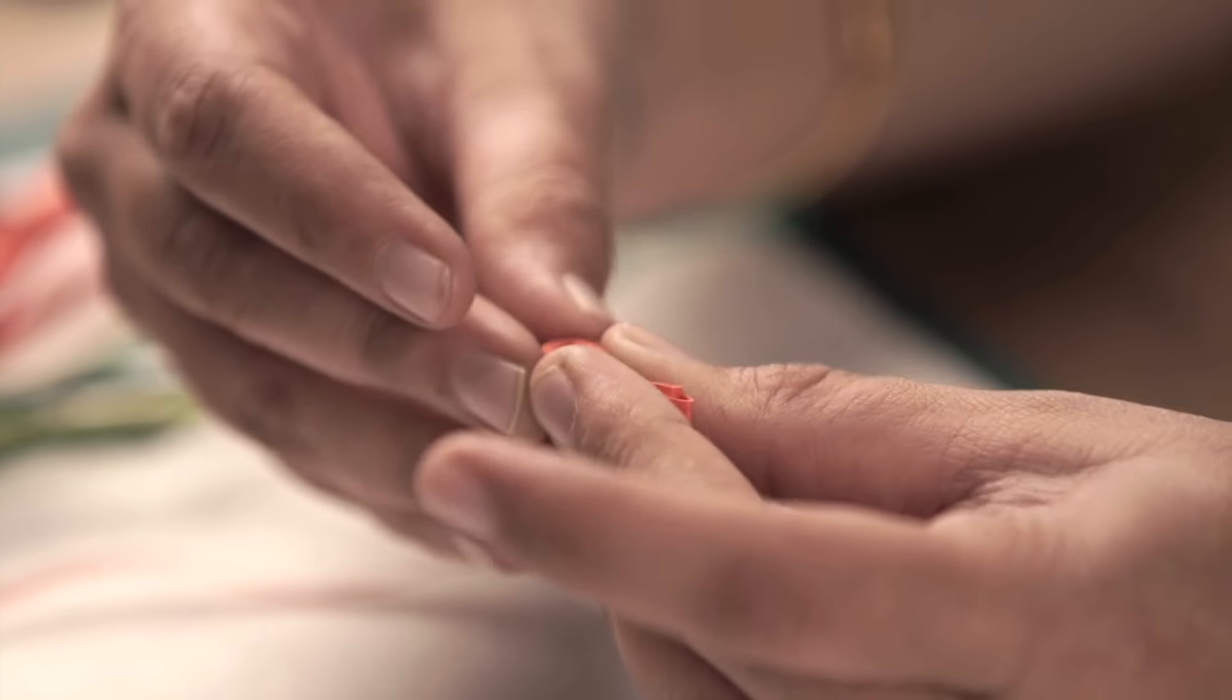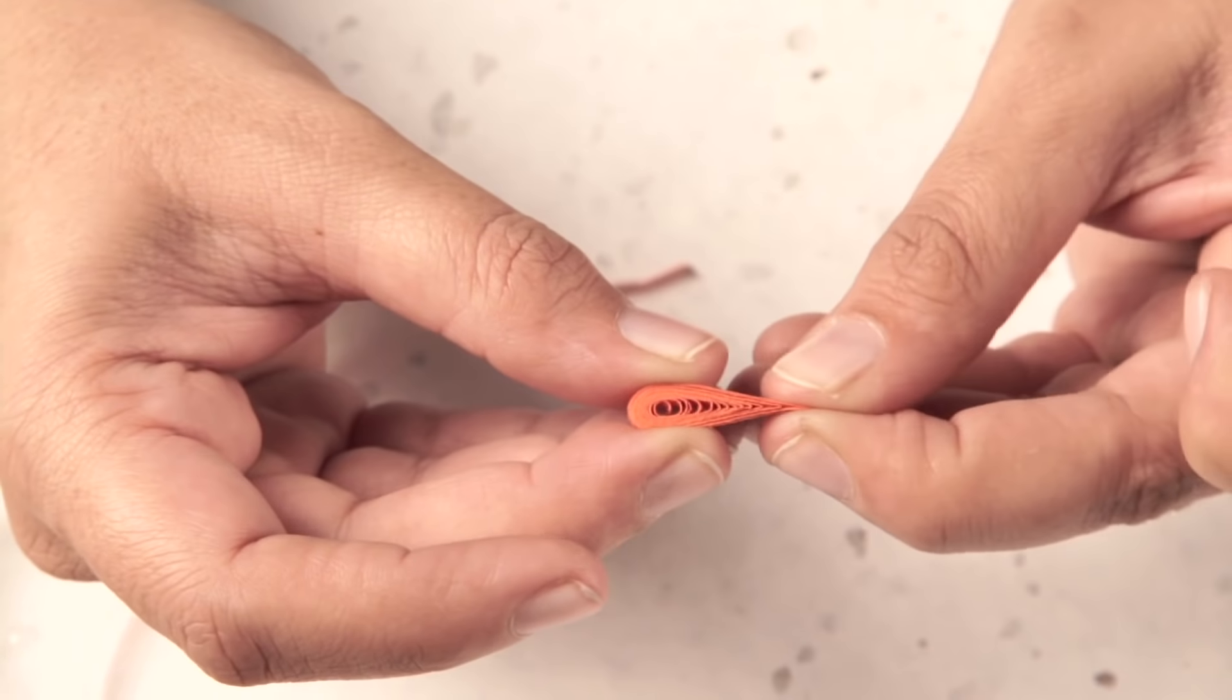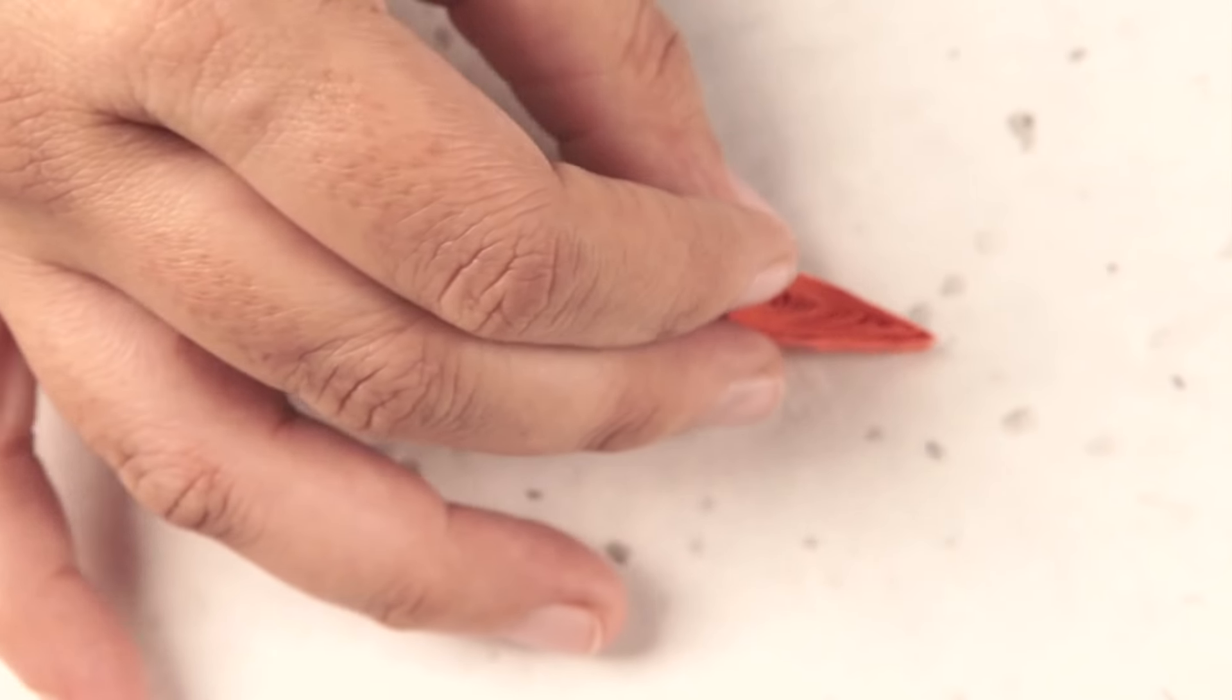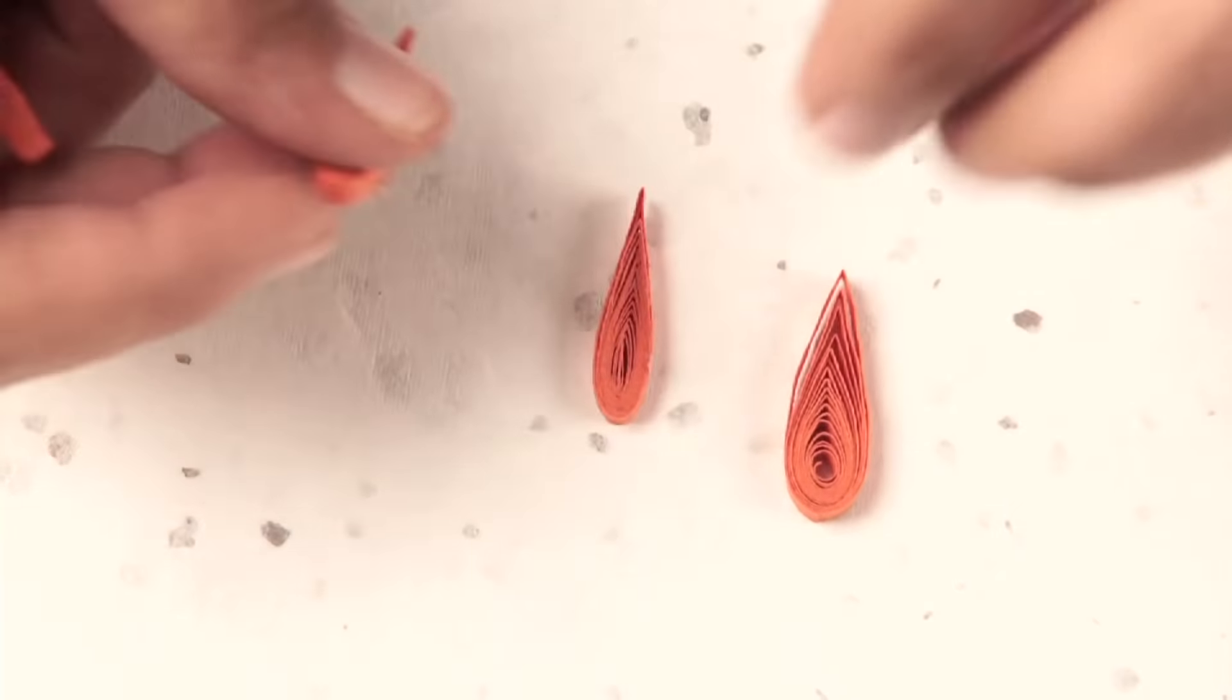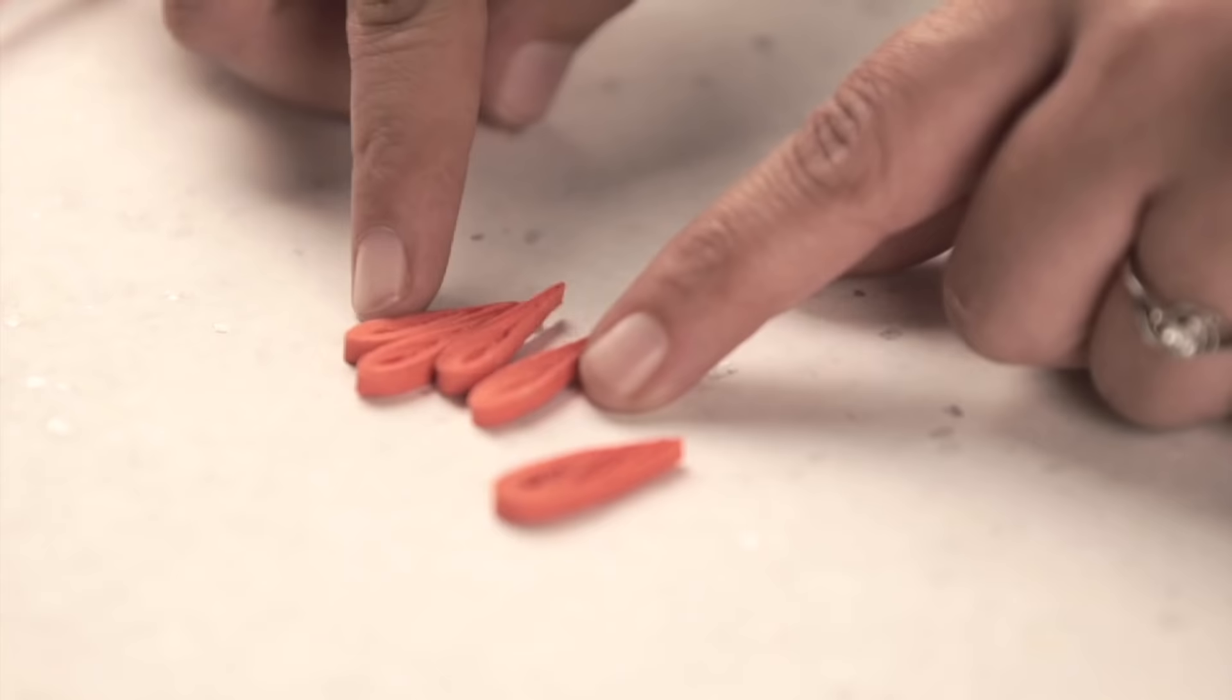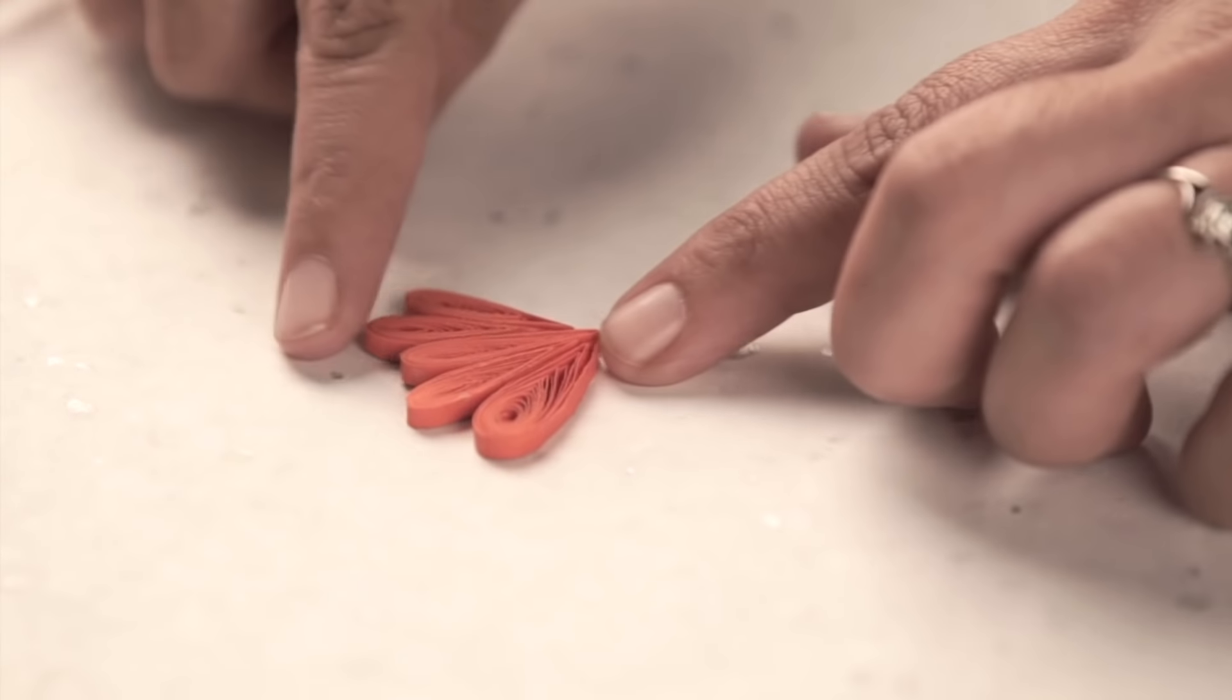Fold it into a teardrop—this is how it will look. Now once that's done, make five such petals. I've kept them ready and stuck them together on one side, and we're going to stick all of these together.